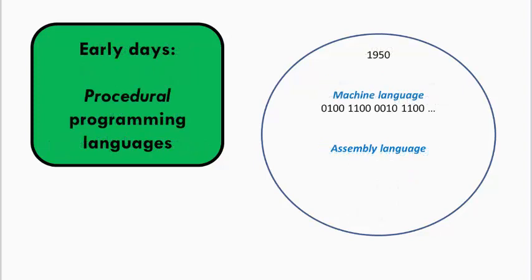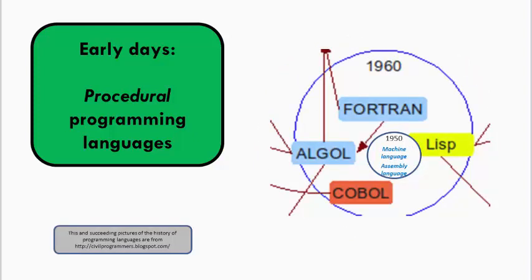The first languages were directly related to the computer's hardware. But soon, computer scientists developed more sophisticated languages. Four such languages dominated the early days. Three of these, Algol, Fortran, and COBOL,